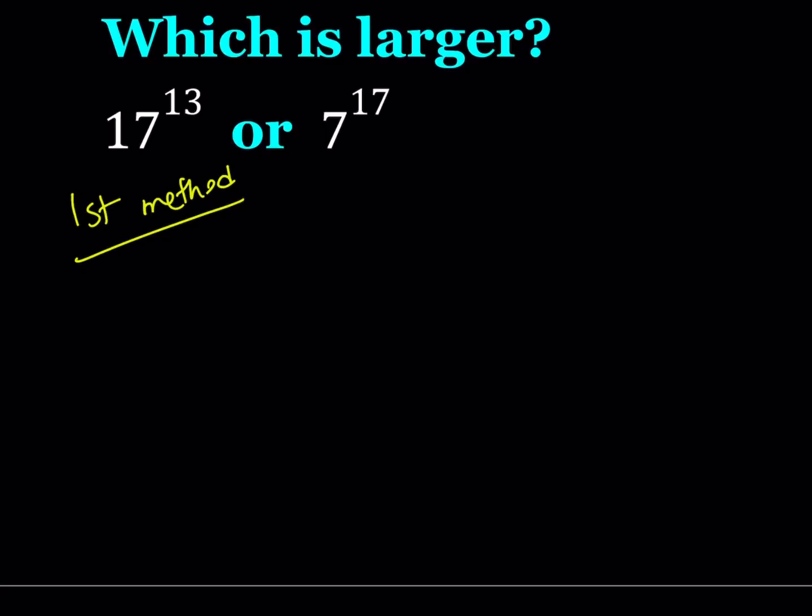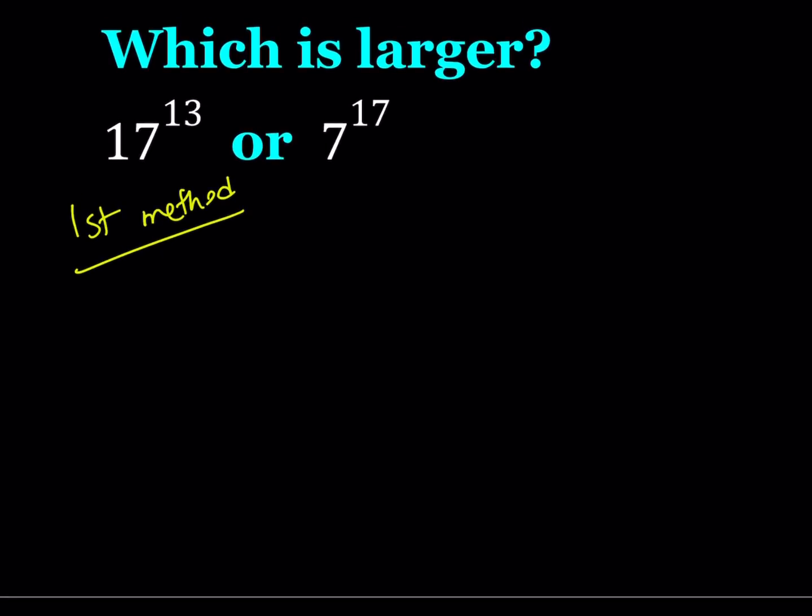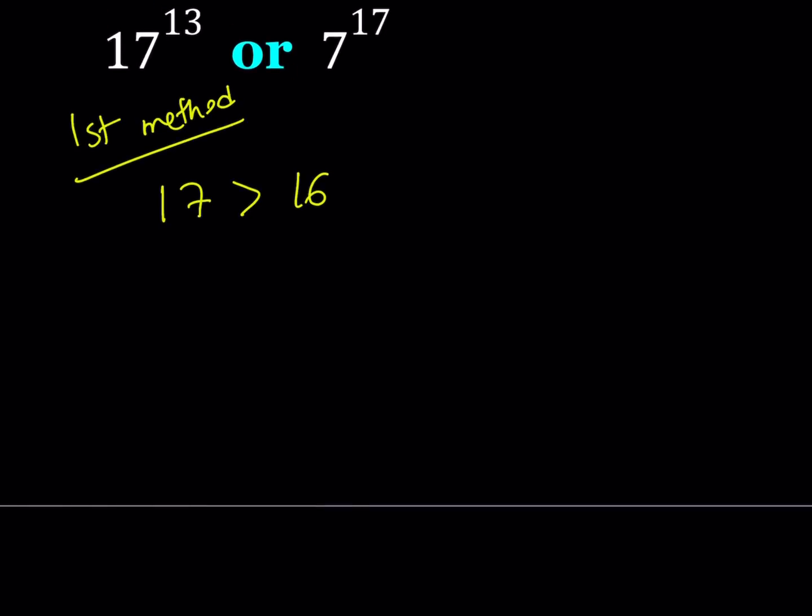For our first method, we're going to compare 17 to a power of 2, and we're going to do the same thing for 7, and then we'll put those two together. 17 is obviously greater than 16, which is 2 to the fourth power. So I can safely say that 17 to the power of 13 is greater than 16 to the power of 13.